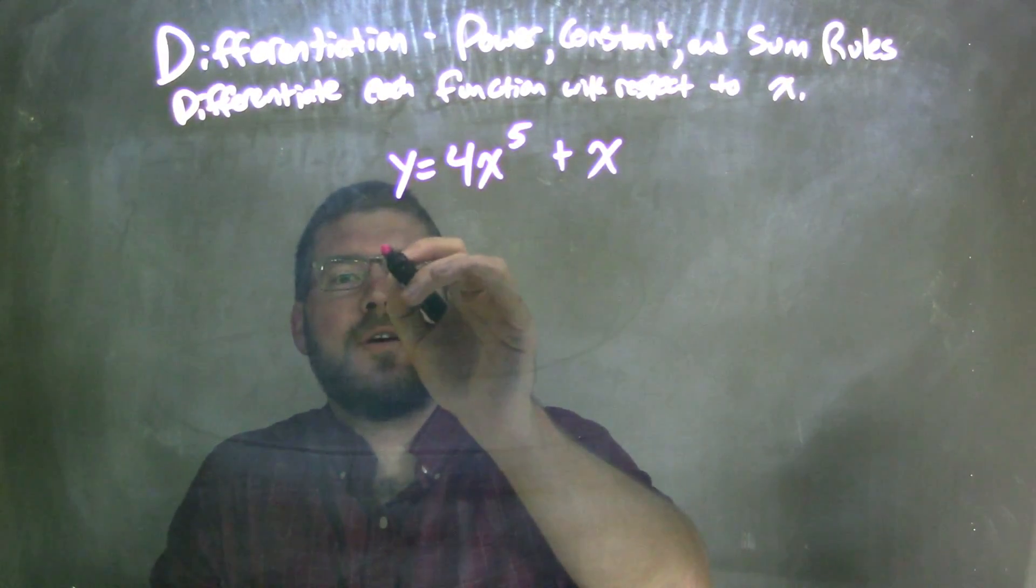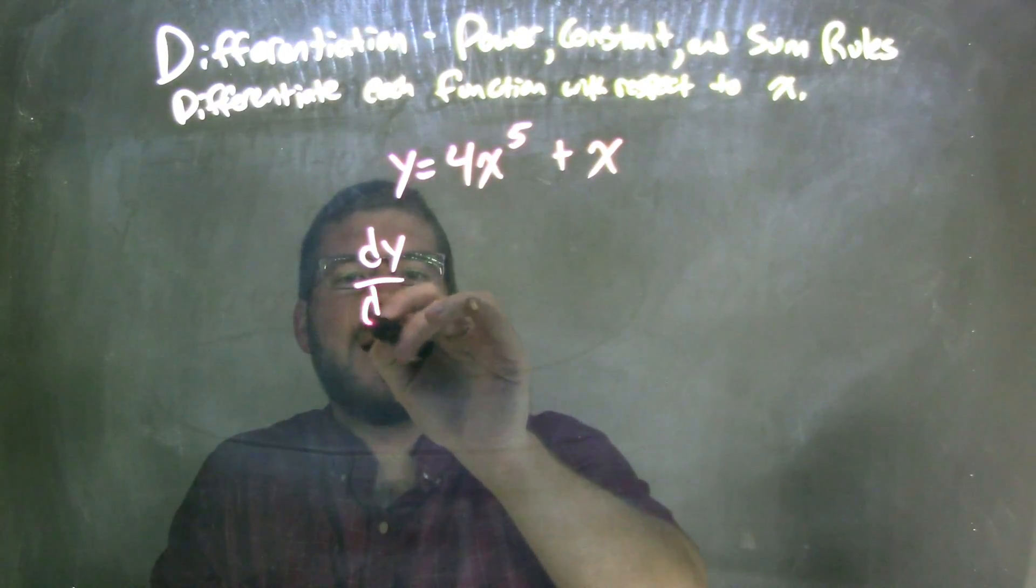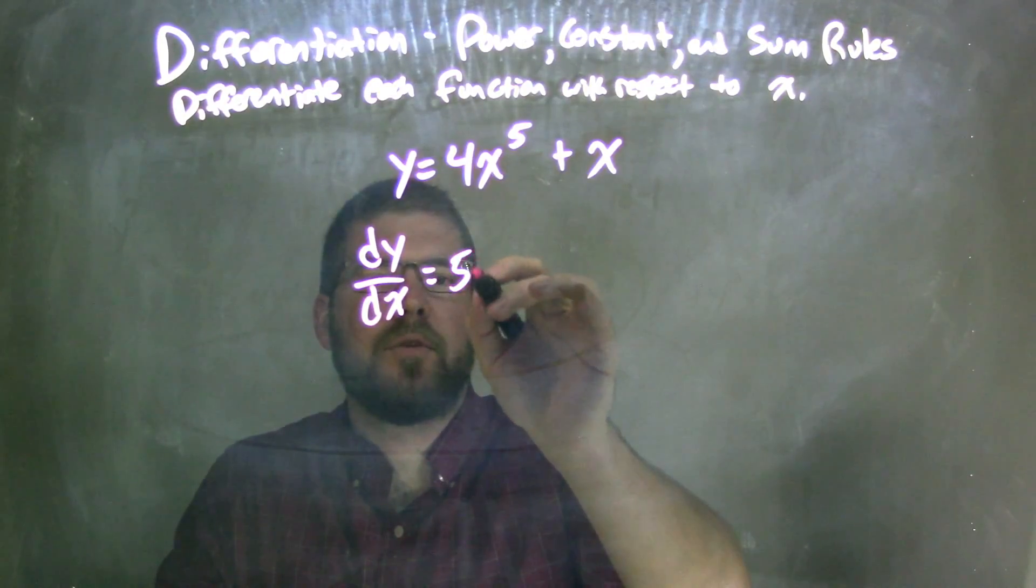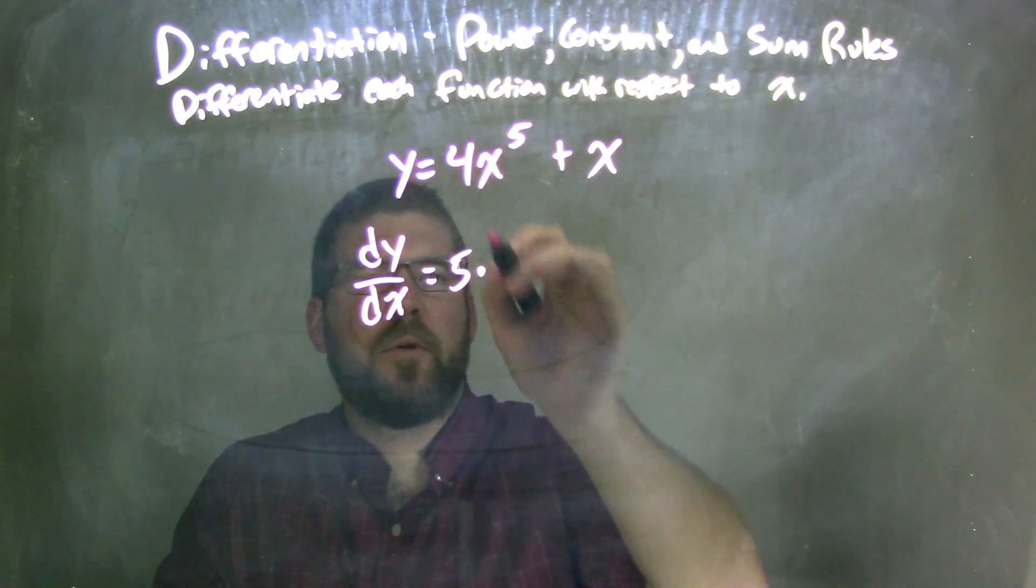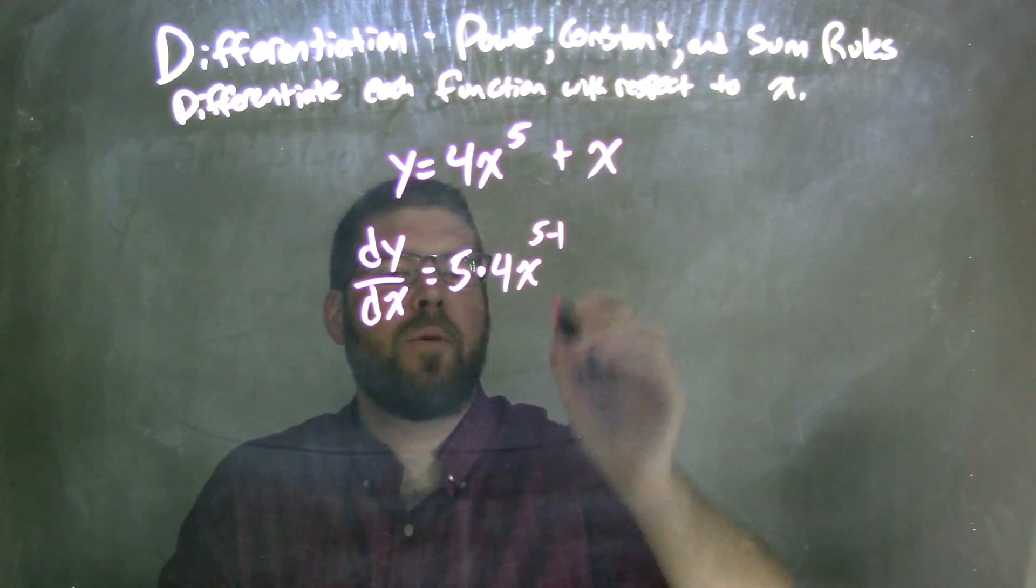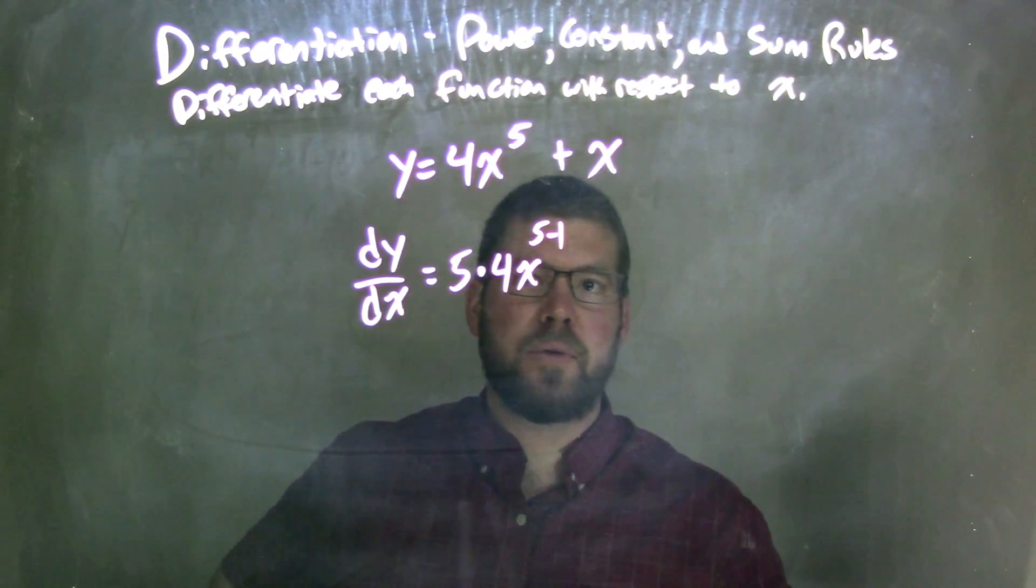So when I take my derivative here, my dy over dx, power rule states that this 5 comes out, and I'll put it out front this time. So 5 times 4 out front for multiplication, for x to the power of 5 minus 1. We take whatever that exponent was, and we subtract 1 from it.